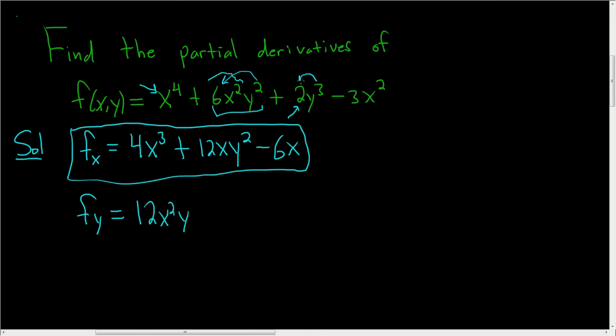And here we get 3 times 2, which is 6, so 6y squared. And this is constant, so the derivative of this is 0. So there we have the first partial derivative with respect to x and the first partial derivative with respect to y. I hope this video helps.